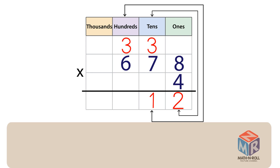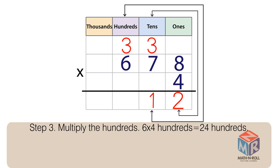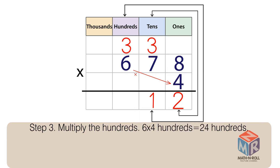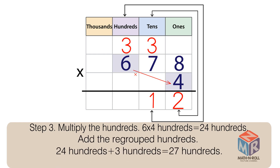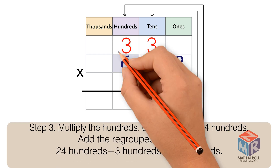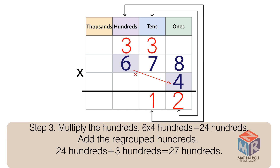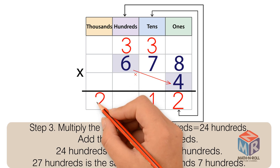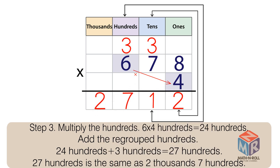Step 3: Multiply the 100s. 6 × 4 hundreds equals 24 hundreds. Add the regrouped hundreds: 24 hundreds plus 3 hundreds equals 27 hundreds. 27 hundreds is the same as 2 thousands and 7 hundreds. The answer is 2,712.